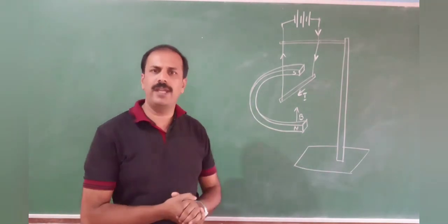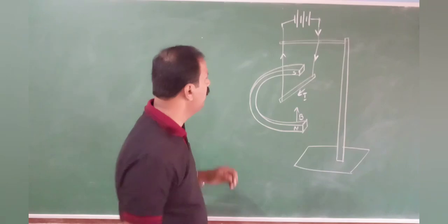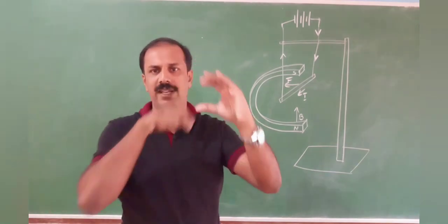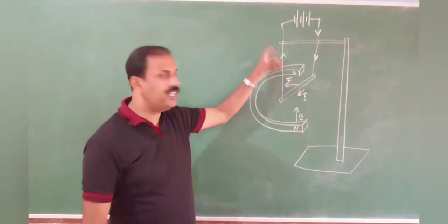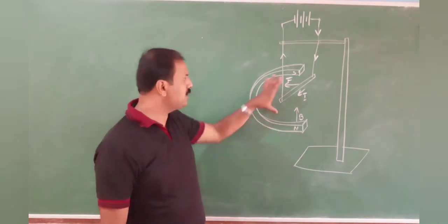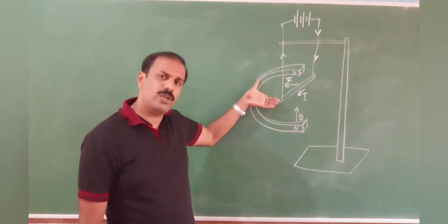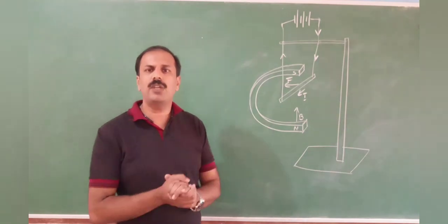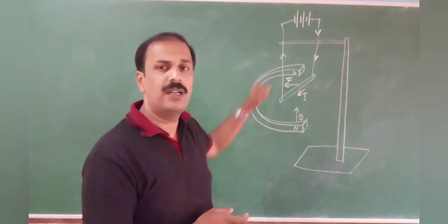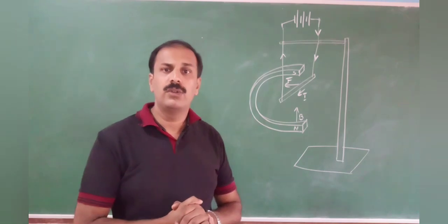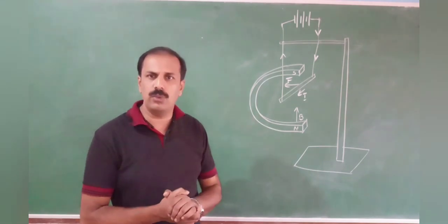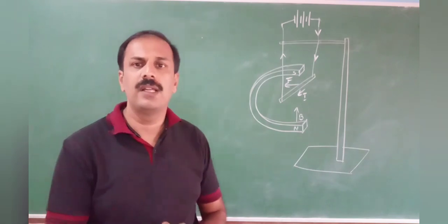If you practically do this, you can see the direction of force will be towards this side. F will be towards this side. Now, if you change the direction of current, then it will go in the opposite direction. Or, if you change the direction of magnetic field — that is, if you rotate north and south — then also it will change. So, in which direction the force is acting depends on the direction of current and the direction of magnetic field. To explain this, or to find out in which direction the force is acting, we have a rule called Fleming's left-hand rule.